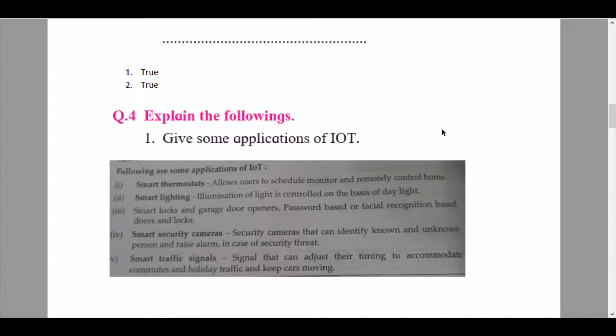So then we start with give some applications of IoT. Following are some of the applications of IoT. The first one being smart thermostats: these allow users to schedule, monitor, and remotely control home. Second application is smart lighting: illumination of light is controlled on the basis of daylight. Third application: smart locks and garage door openers - password based or facial recognition based door locks.